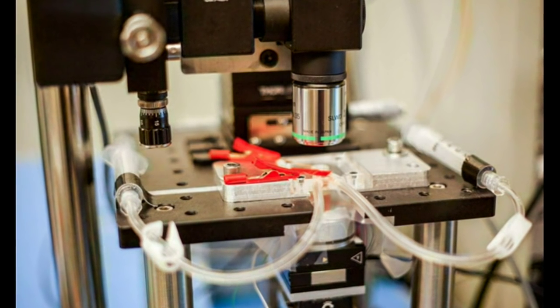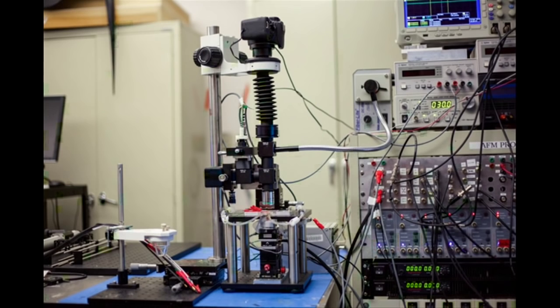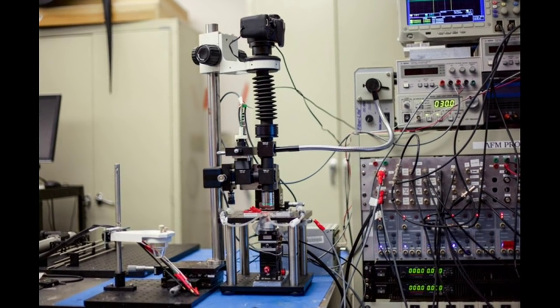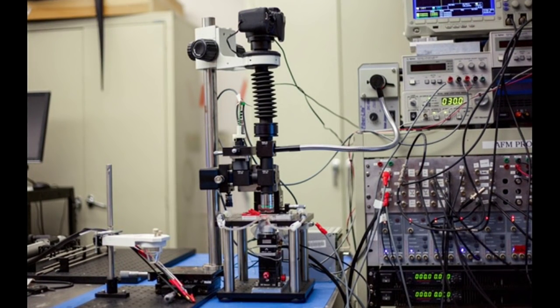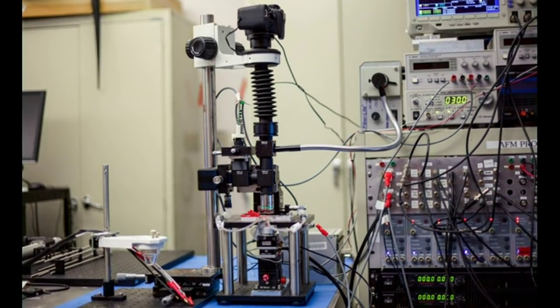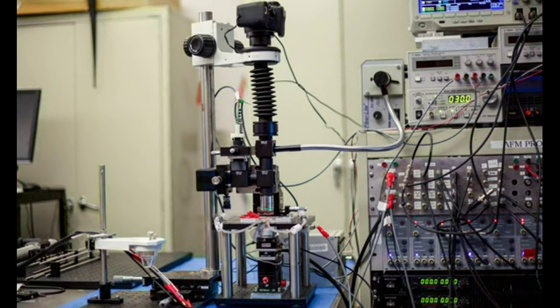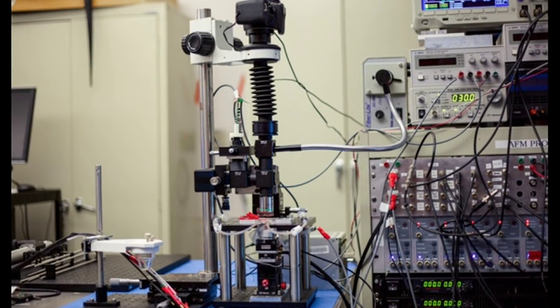Atomic force microscopes typically scan samples using an ultrafine probe or needle that skims along the surface of a sample, tracing its topography, similarly to how a blind person reads braille. In recent years,